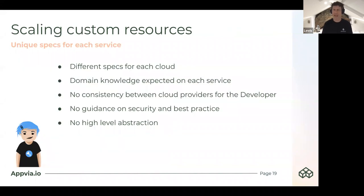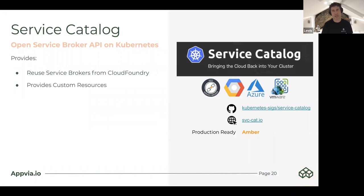How do we scale custom resources to make a bit more sense? At the moment, we have different specifications for each cloud, there's domain-specific knowledge required, there's no consistency for the developer, and almost more importantly, there's no guidance about security and best practice around which plan to use. There's no high-level abstraction for those Kubernetes resources and operators. So at this point, it's worth delving into history as it informs where we are today in the industry.